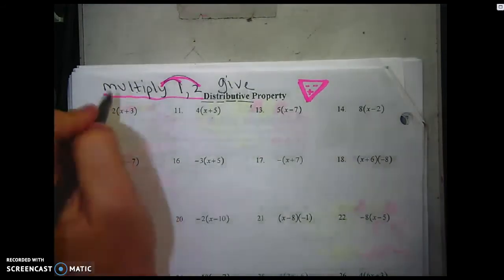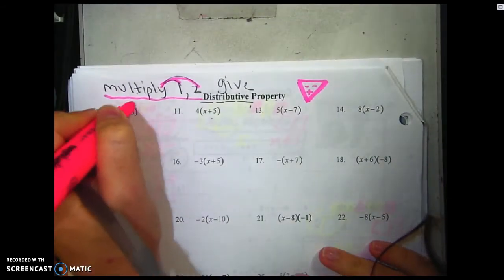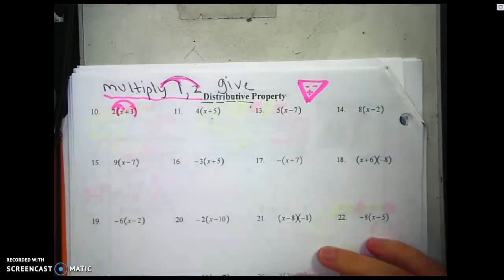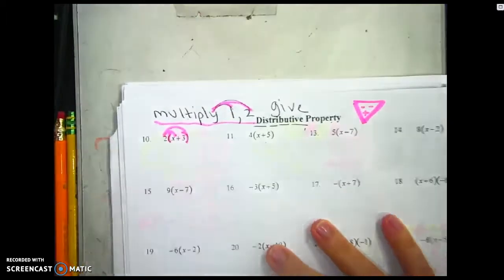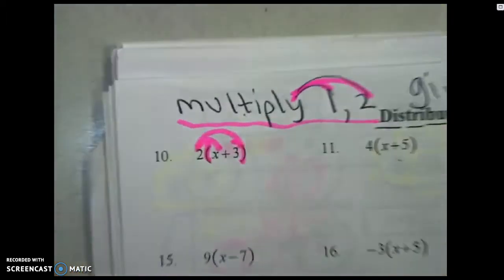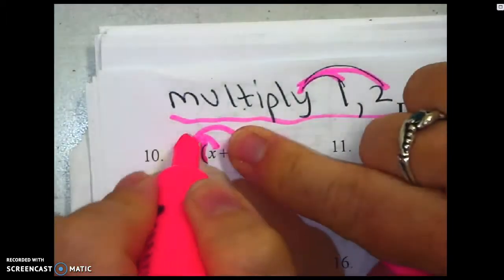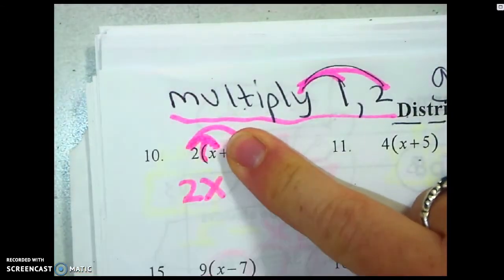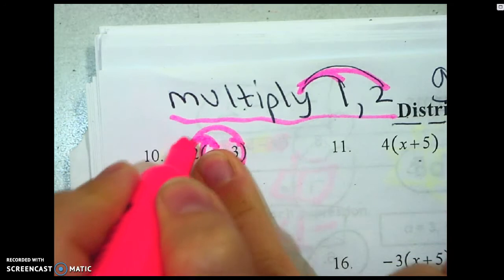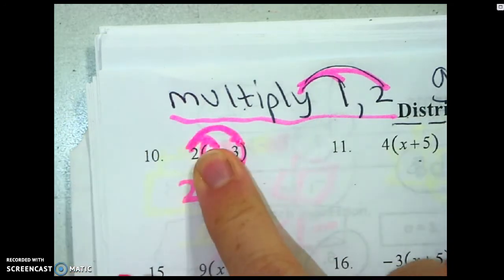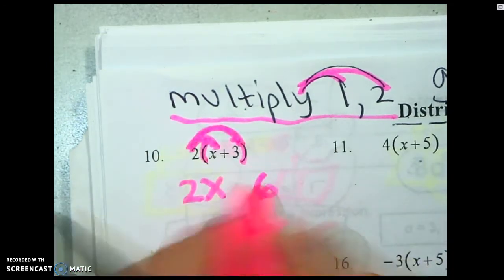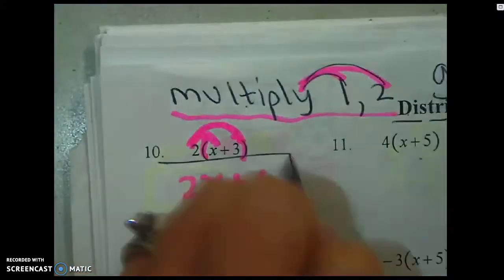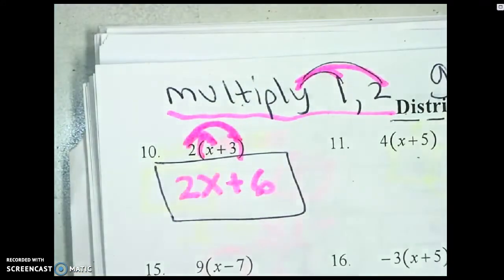Let's look at number one. Because you see parentheses, you're going to give, and you're going to give. When I give once, two times x is two x. And then when I give twice, two times three is six. You have to put something in the middle — it's a plus. Boom, you're done.